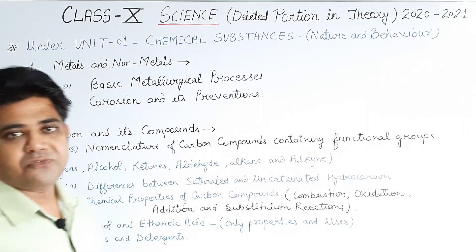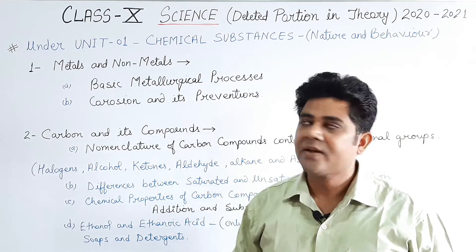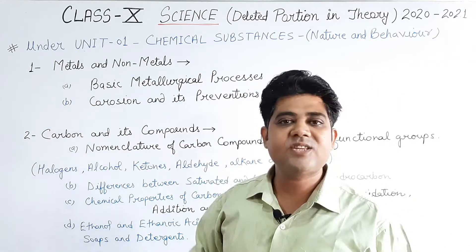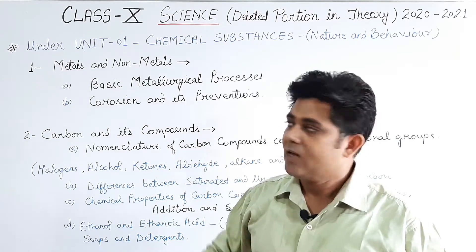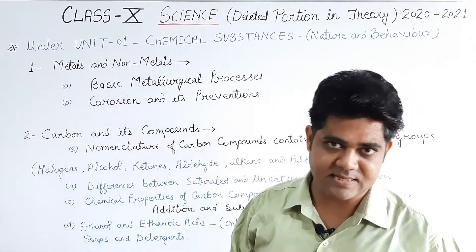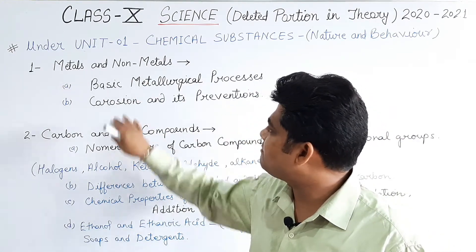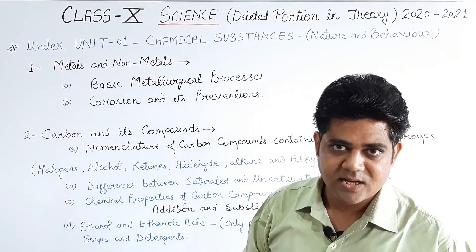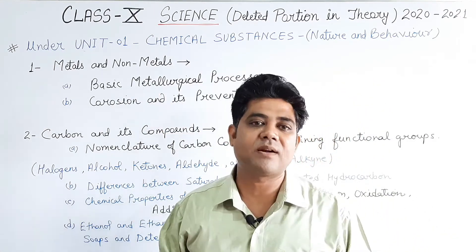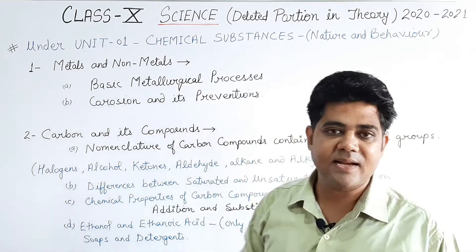Under Unit 1, the first unit of science is Chemical Substances. In the chapter of Metals and Non-Metals, the basic metallurgical processes are removed. All metallurgical processes included in that chapter — roasting, calcination, concentration of ore, extraction of metal from concentrated ore, and refining — you will not have to study these this session.